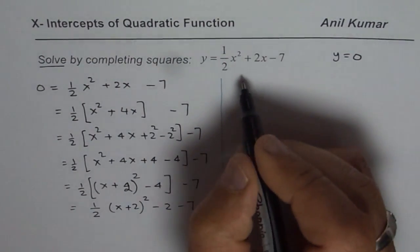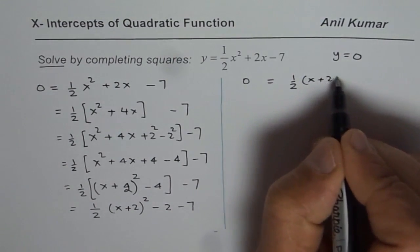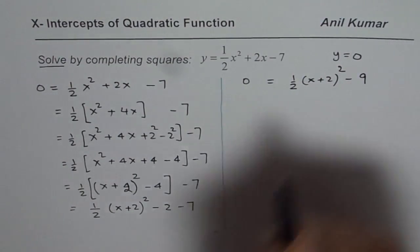So what we get here is 0 equals half of x plus 2 whole squared minus 9.